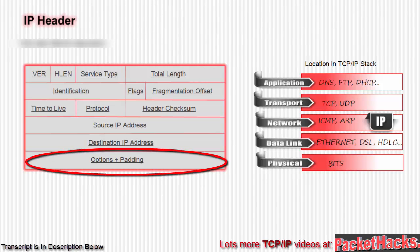Last but not least, you have the options and padding field. Options don't seem to be used much anymore, so we can pretty much skip this for now. But if you do use them, you add enough padding so that the field is exactly 32 bits. That seems like fertile ground for crafted packets.